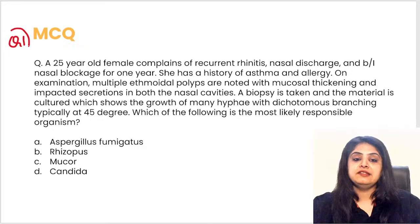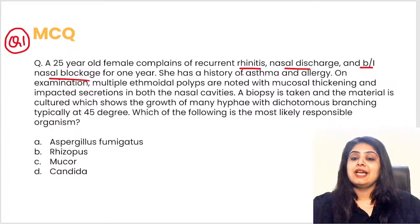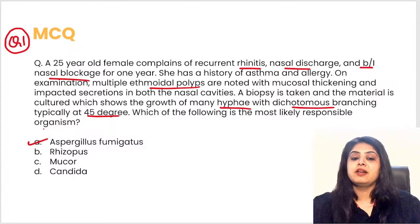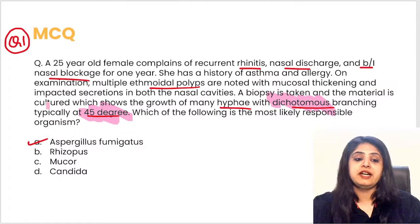Question one: a 25-year-old female complains of recurrent rhinitis, nasal discharge, and bilateral nasal blockage for one year. She has a history of asthma and allergy. Examination shows multiple ethmoidal polyps with mucosal thickening and secretions. Biopsy shows multiple hyphae with dichotomous branching typically at 45 degrees. The answer is Aspergillus fumigatus — the buzzwords were 'dichotomous' and '45 degree.'